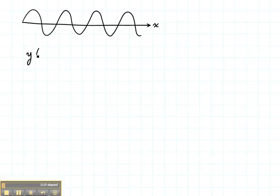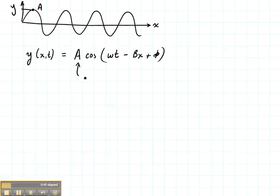We could describe this wave, which we're going to call y, as a function of x and t as amplitude times the cosine of omega t minus beta x plus phi. In this case, y would be the amplitude of that wave as a function of distance and time. A would be the amplitude, the maximum value that could be reached. So this is the amplitude, and it's also the max of that wave.